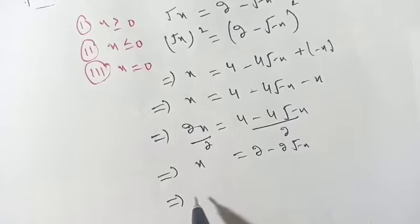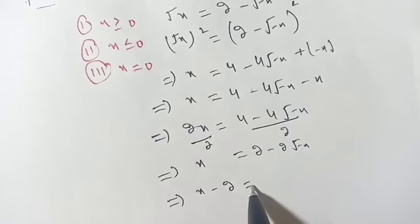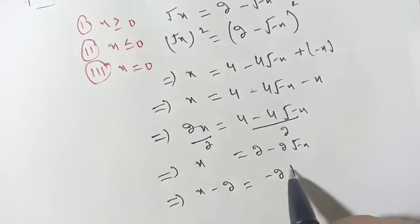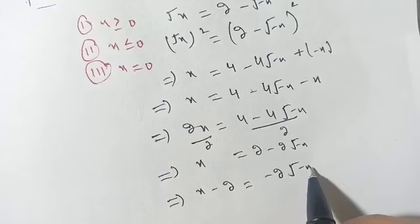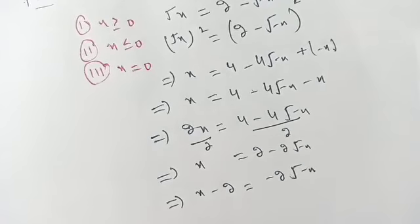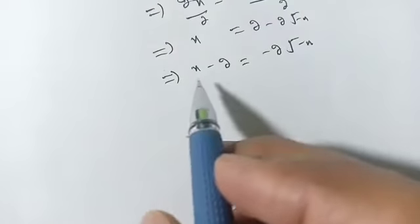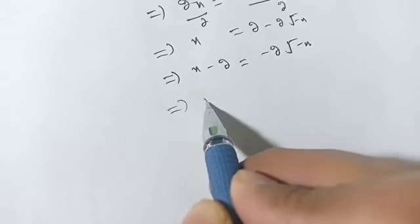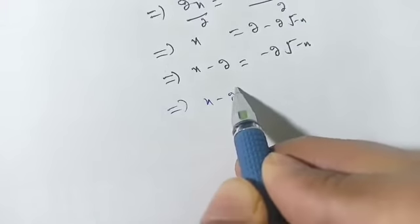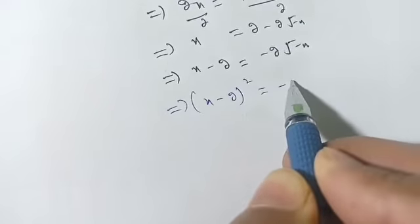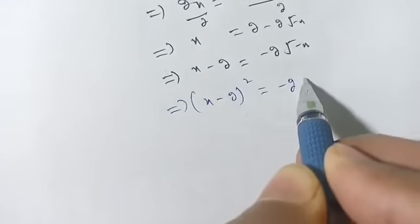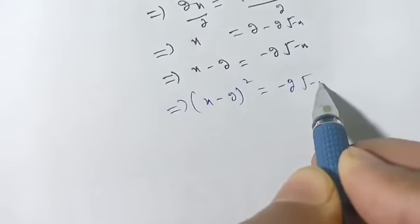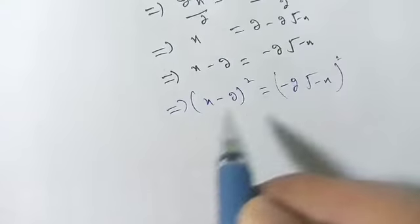The next step is: x minus 2 is equal to minus 2 root of minus of x. Then we square both sides again. We get x minus 2, whole square, is equal to minus 2 root of minus of x, whole square.